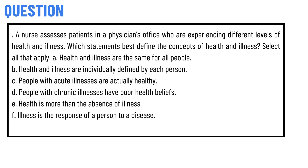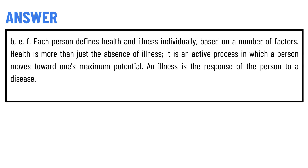Option A: Health and illness are the same for all people. Option B: Health and illness are individually defined by each person. Option C: People with acute illness are actually healthy. Option D: People with chronic illness have poor health beliefs. Option E: Health is more than the absence of illness. Option F: Illness is the response of a person to a disease.